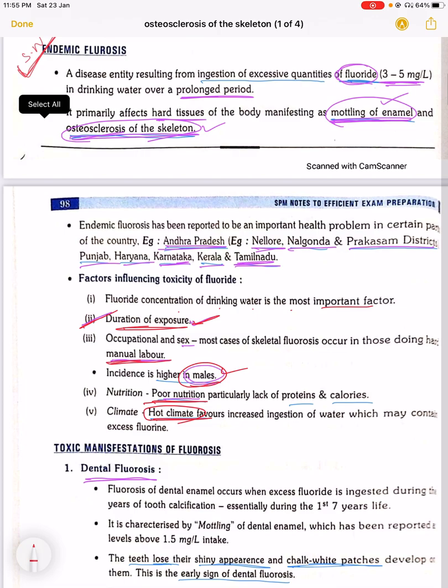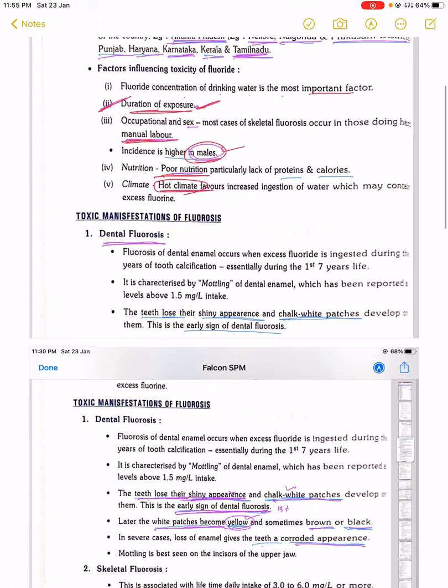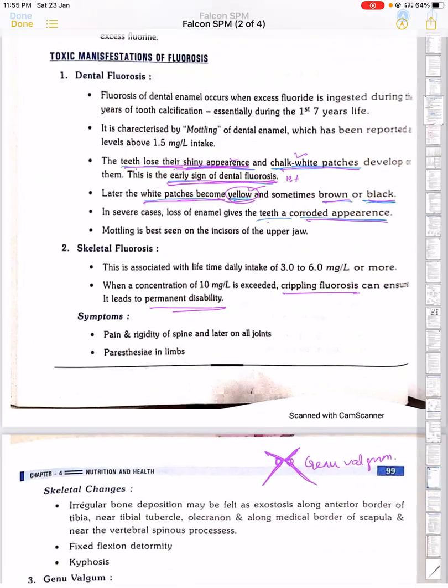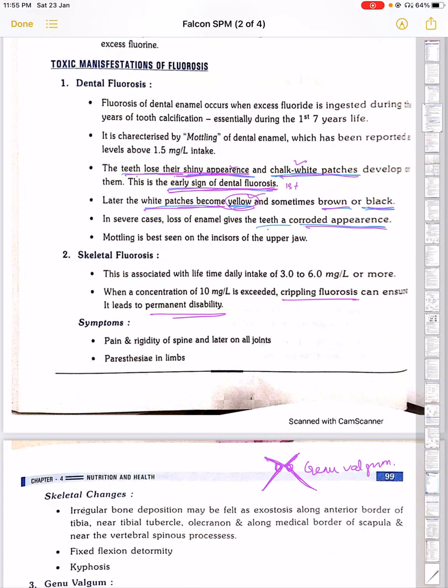What are the toxic manifestations? First is dental fluorosis, then skeletal fluorosis, then genu valgum, and other manifestations.